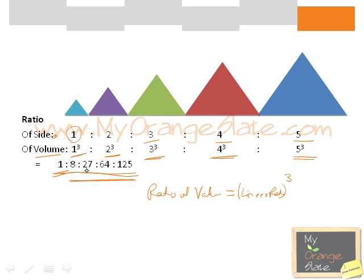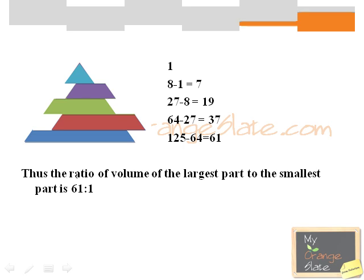The volume of the four frustums can be calculated as follows: if the volume of the smallest cone is 1,